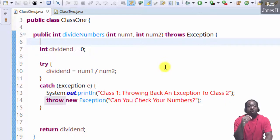Throw is used to manually throw an exception, and throws is declared in the method's signature to declare an exception that might get thrown. That's it for throw and throws.